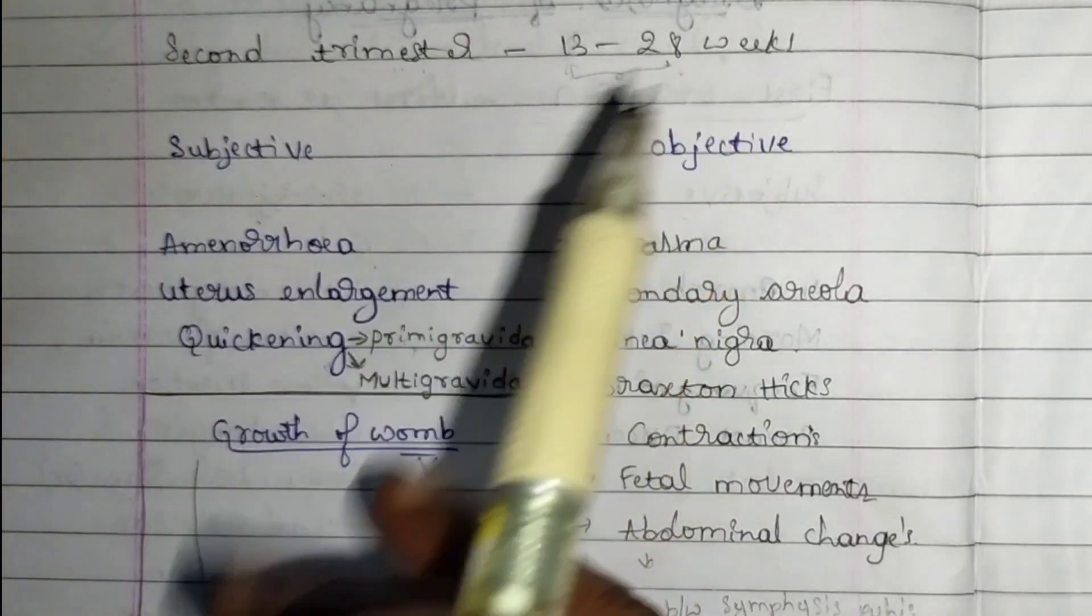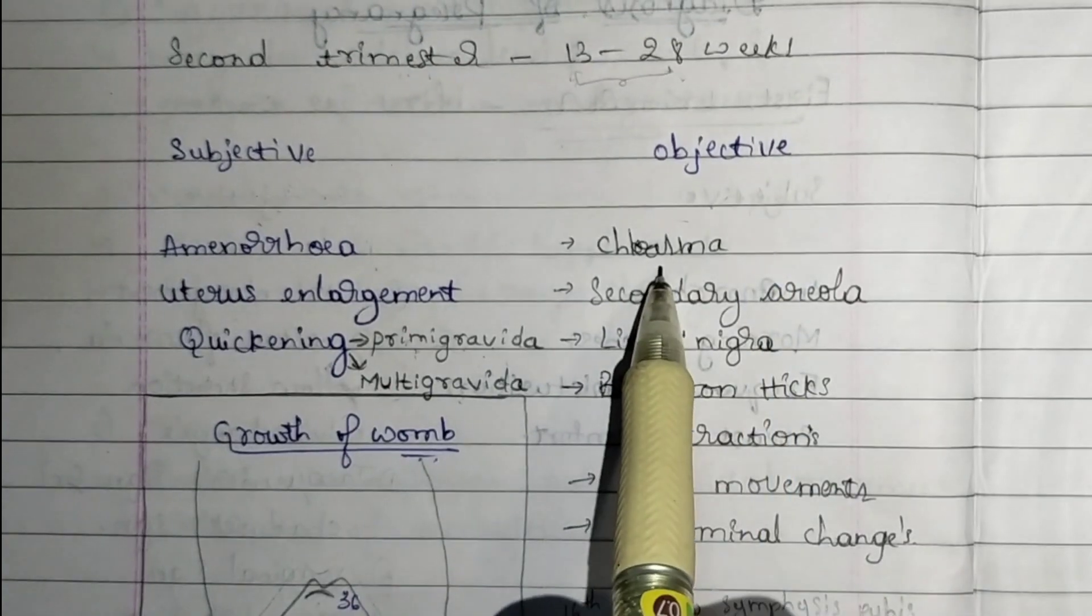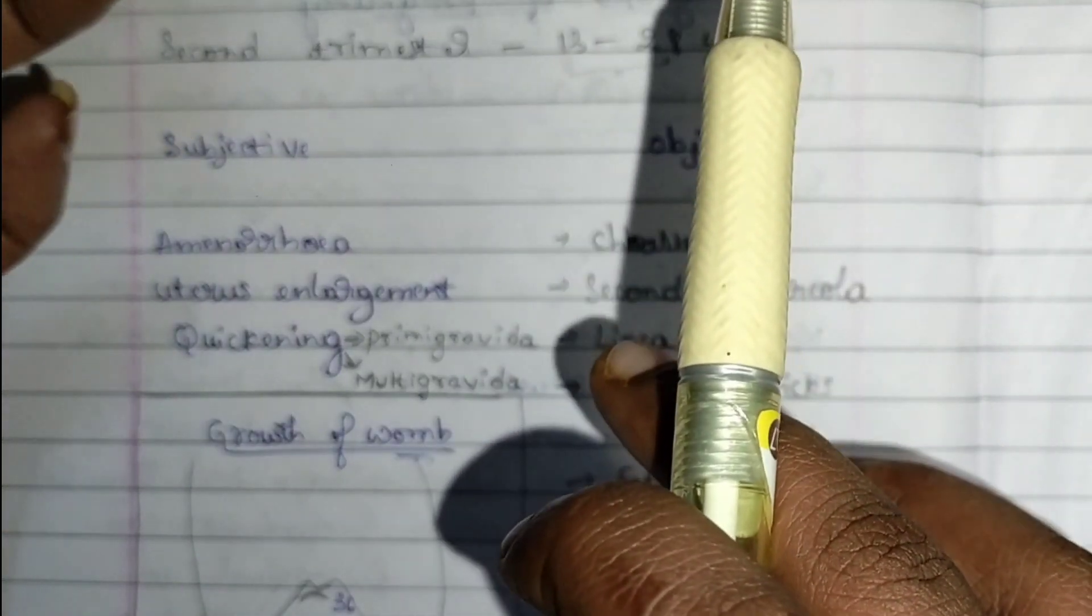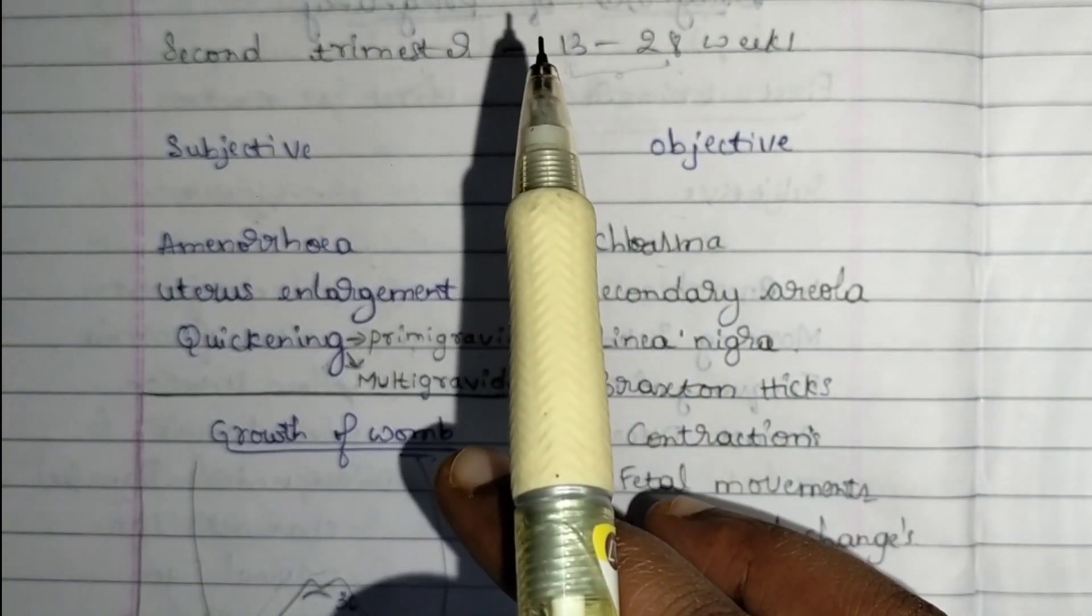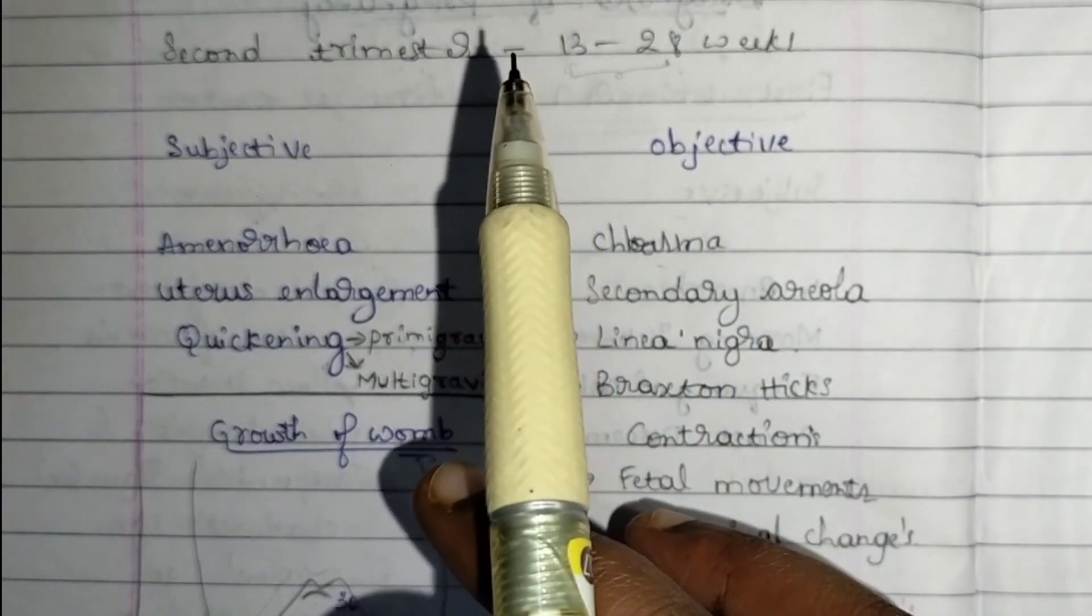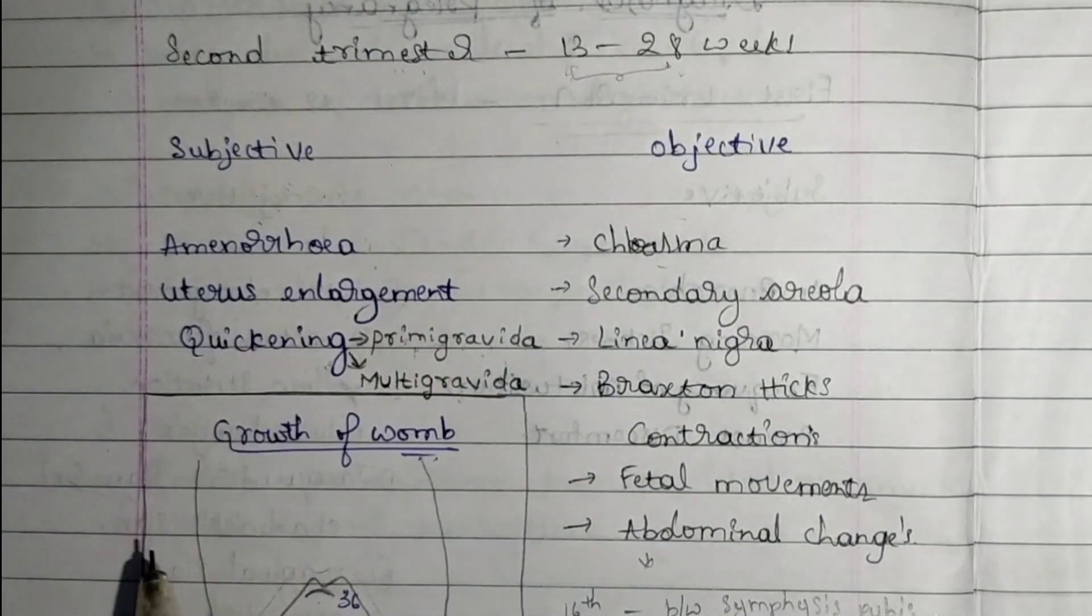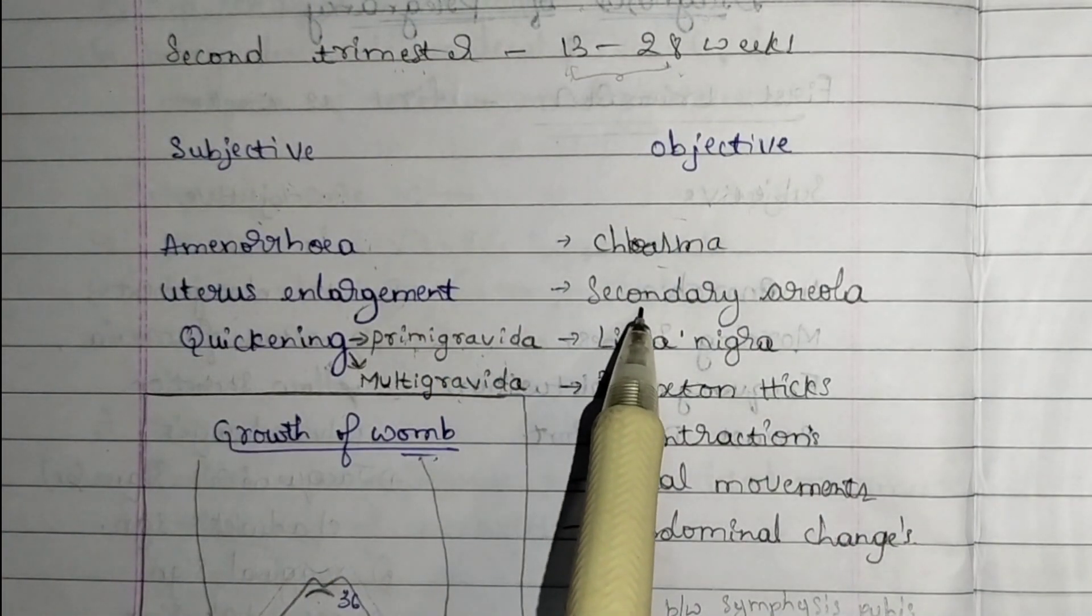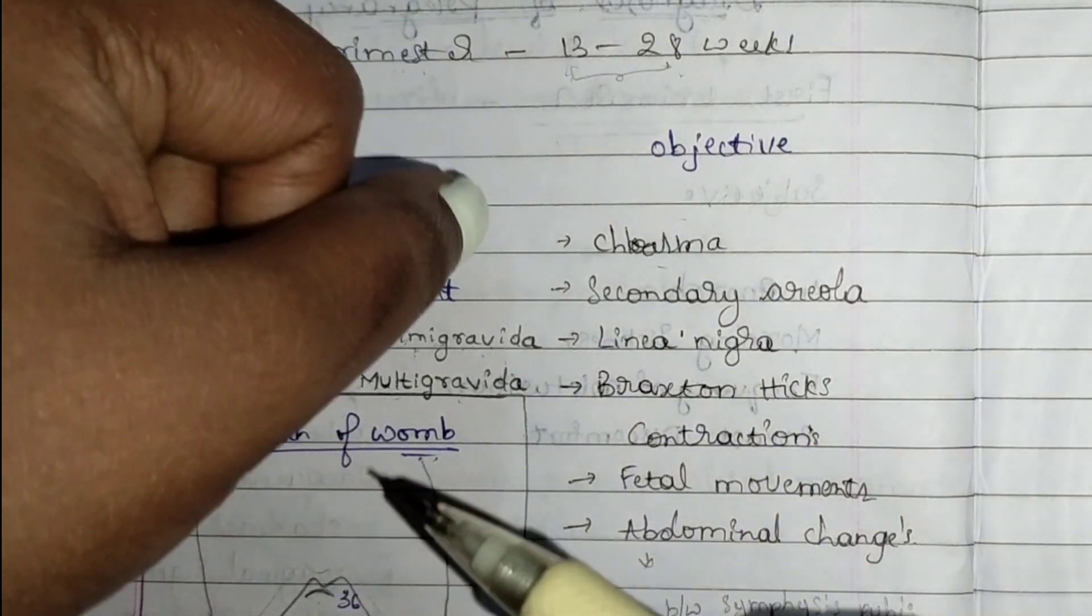For objective signs, first is chloasma, which is pigmentation around the face. There are patchy pigmentations that are brownish or reddish in color, seen around the head and forehead.